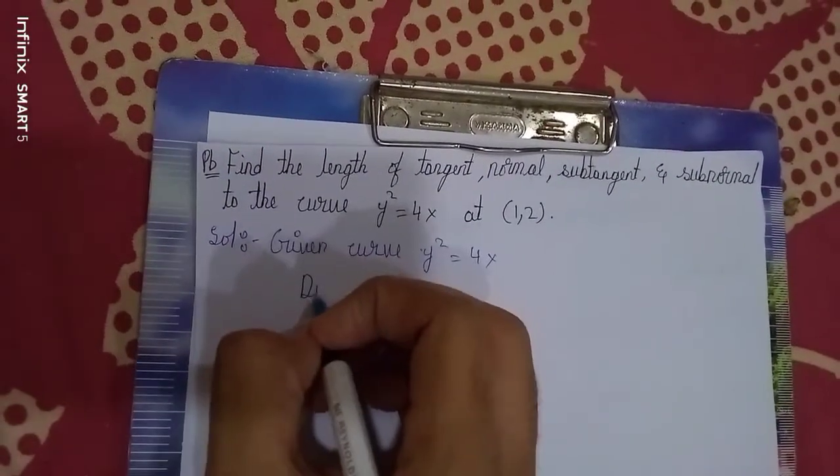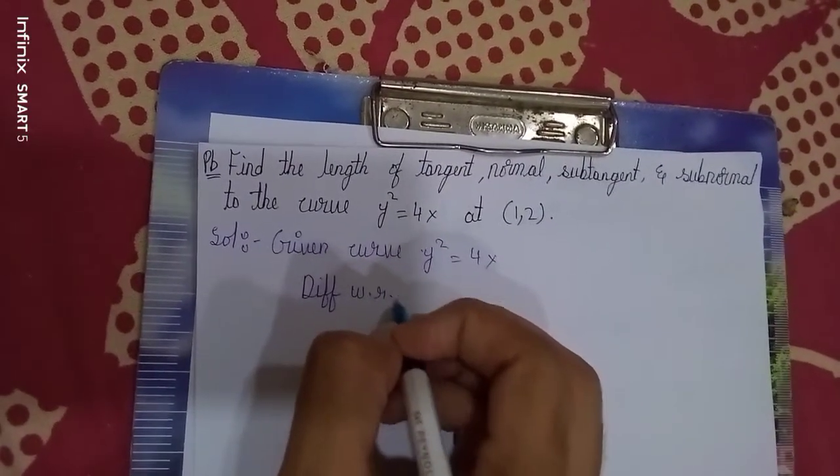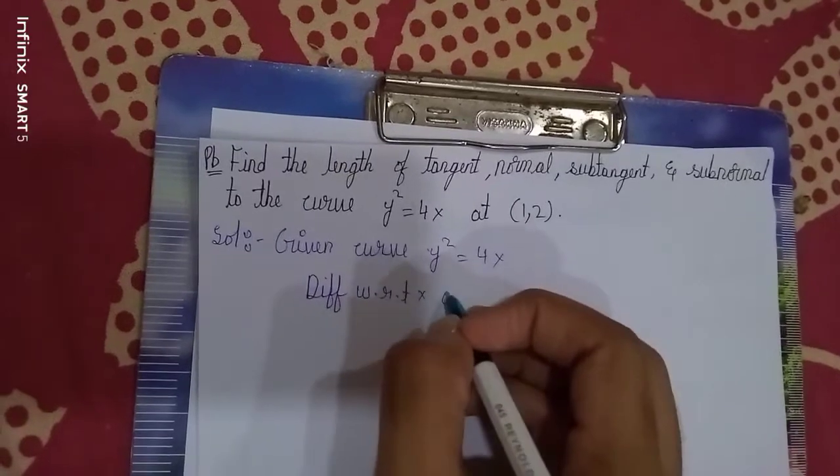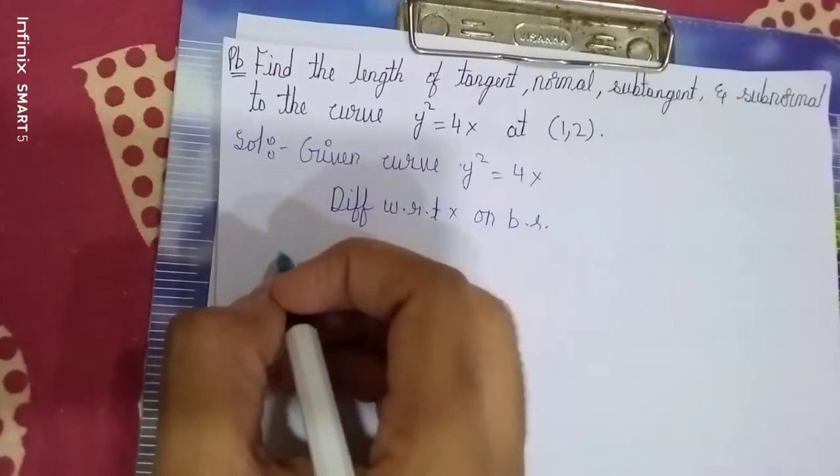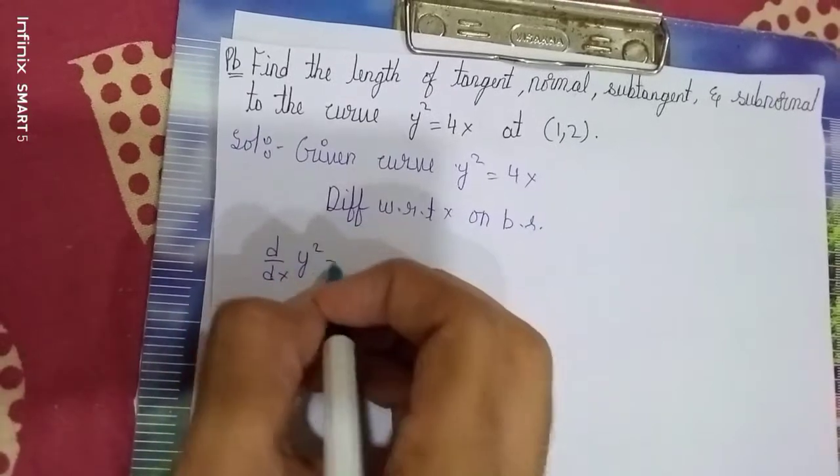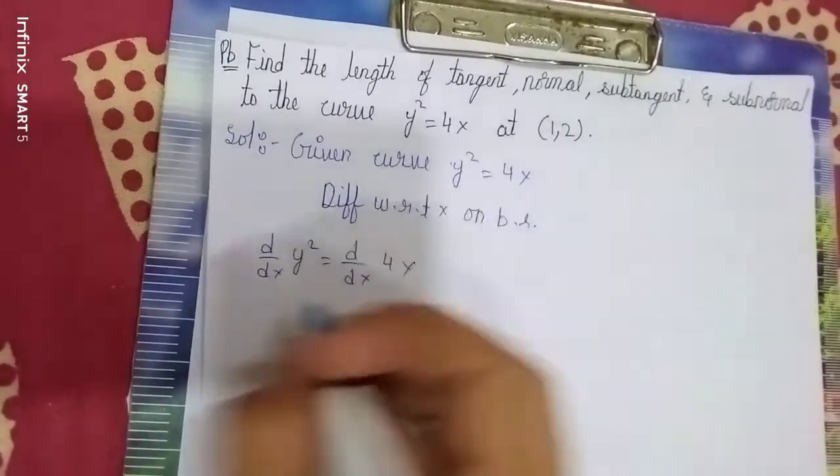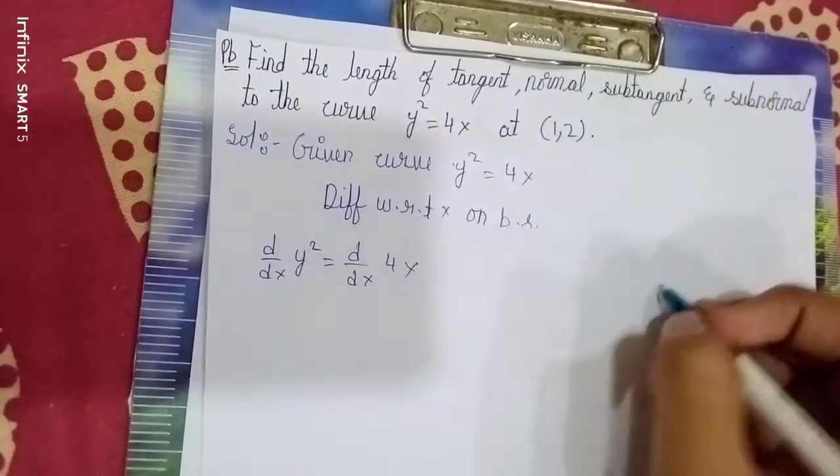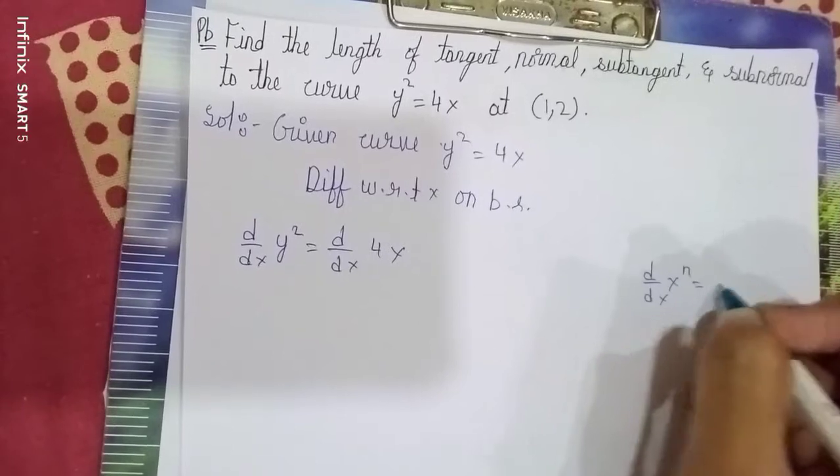Now, differentiate with respect to x on both sides. d/dx of y² = d/dx of 4x. This is in the form of d/dx of x^n.